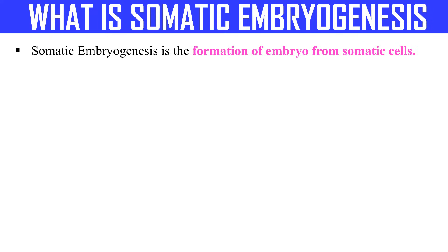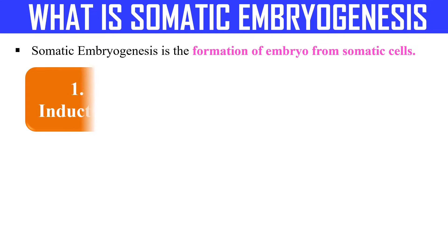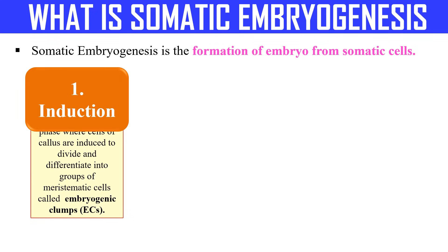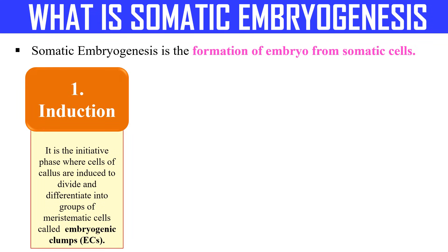Now, what are the phases or steps of somatic embryogenesis? It generally includes three steps. The first step is induction, in which the somatic cells are induced to change into meristematic cells, which are known as embryogenic clumps or EC cells.